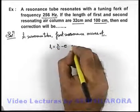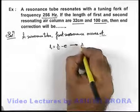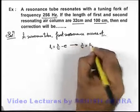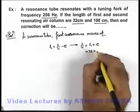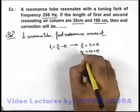And this gives us lambda by four is equal to L1 plus e, and L1 is 32 centimeters, so this will be 32 plus e. This is one quarter of the wavelength.